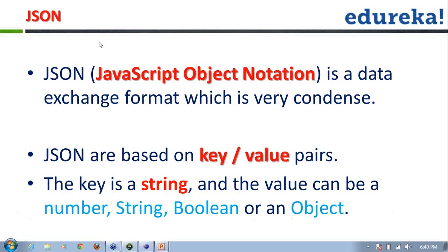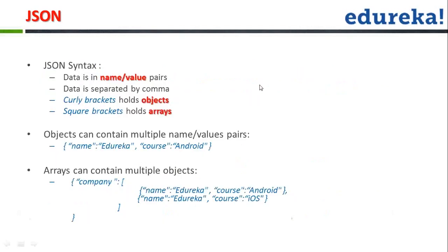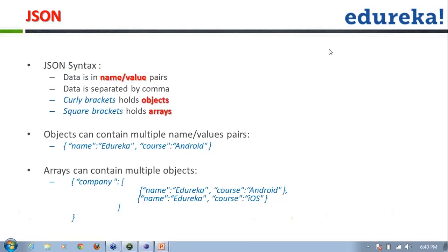JSON objects are based on key-value pairs — there is a key and a value associated with each key. Whenever we read back information, we read it using a key. The key is a string and the value can be a number, a string, a boolean, or a complete object. JSON follows a proper syntax where data is stored in name-value pairs.